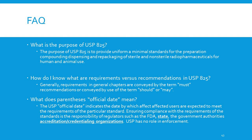Some frequently asked questions: What is the purpose of USP 825? To provide uniform minimum standards of preparation, compounding, dispensing, and repackaging of sterile and non-sterile radiopharmaceuticals for human and animal use. How do I know what are requirements versus recommendations? Generally, requirements in general chapters are conveyed by the word 'must,' while recommendations use the terms 'should' or 'may.'